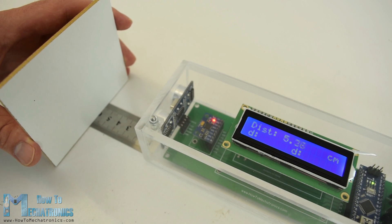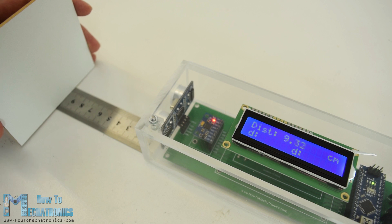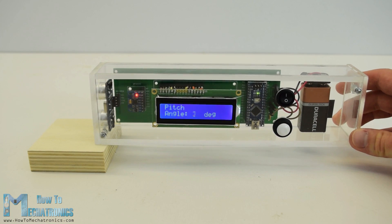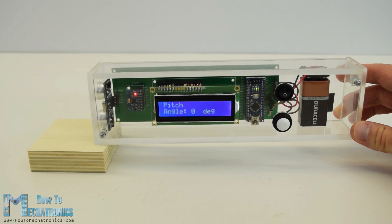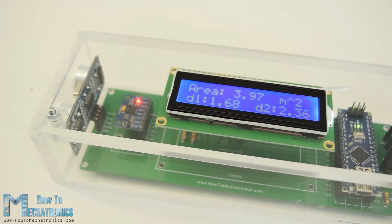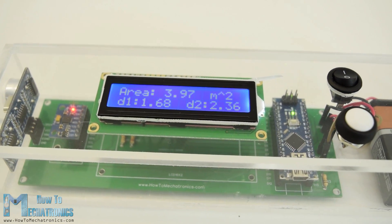The device features an ultrasonic sensor for measuring the distance to the nearest object, an accelerometer for measuring the angle with respect to the ground, an LCD display for showing the results, and a custom designed PCB on which all components are connected.